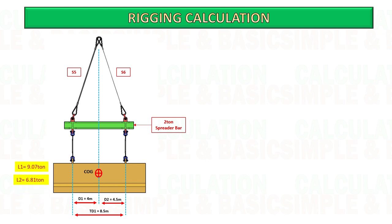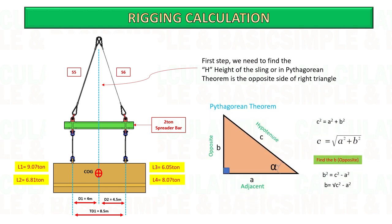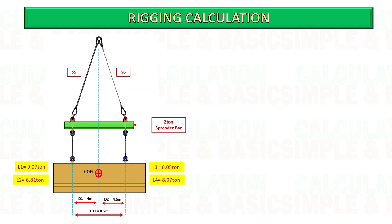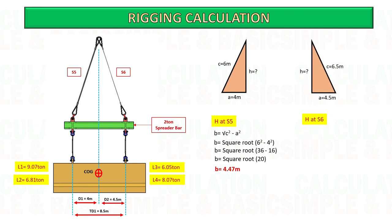Now we can start to calculate the load above the spreader bar. First we need to find the height of the sling based on the given sling length and lifting point distance to COG. We will use the Pythagorean theorem. Calculate the height of sling at number five: wire sling length is 6 meters and distance to COG is 4 meters, and at another point, distance to COG is 4.5 meters.